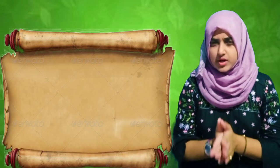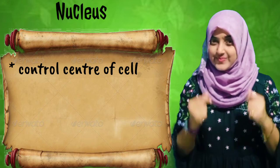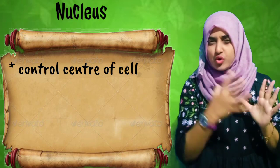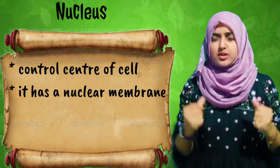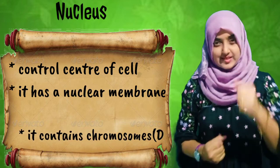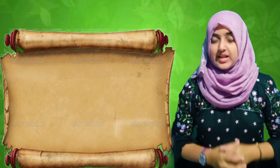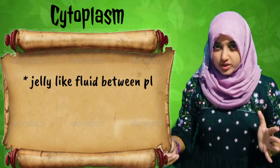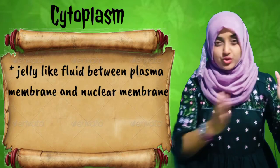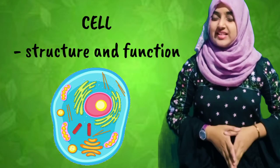Quick recap: the nucleus is the control center of the cell, controls all its functions, has its own nuclear membrane, and contains the exclusive genetic material — chromosomes — that transfers characters from parents to offspring. The cytoplasm is the jelly-like fluid that extends from the plasma membrane up to the nuclear membrane, within which the other cell organelles are present.